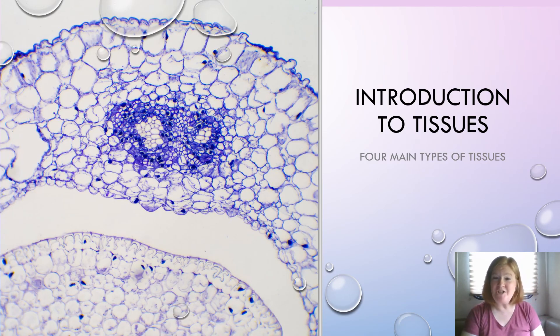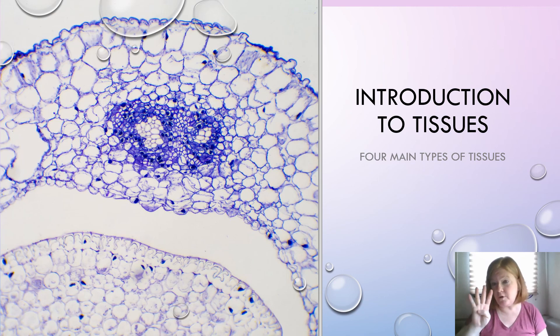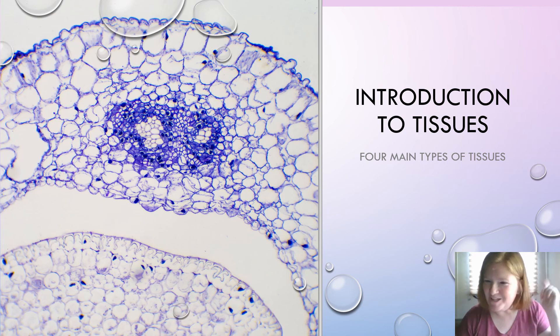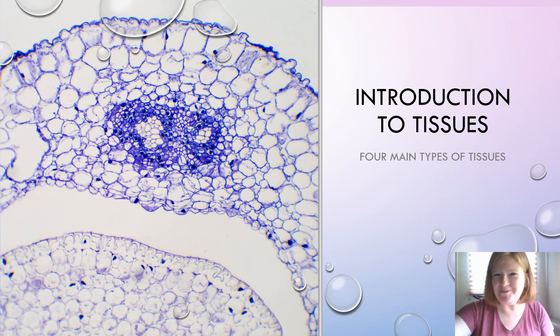That's an introduction to tissues — an overview of the four main types: epithelial, connective, muscle, and nervous. Hopefully today you learned something new.